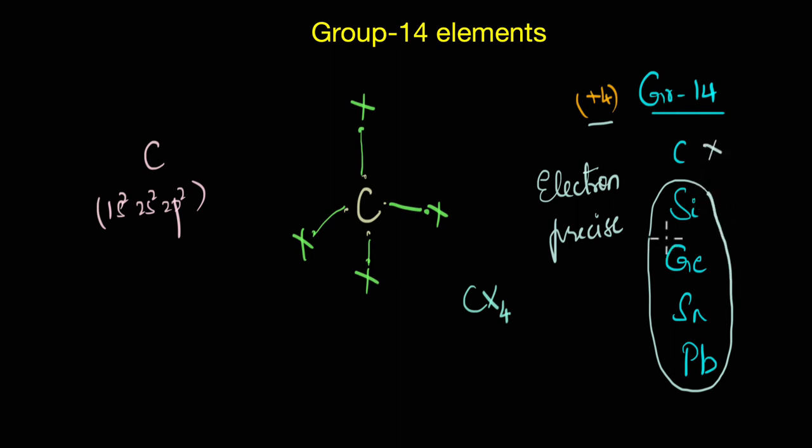But the thing is that some of the elements in this group 14, basically all of the elements except carbon, can still accept extra electron pairs and exceed their covalence beyond four. You might be wondering how is it possible because here you have completely satisfied octet, so where will this extra electron pairs go? Well they would go into the empty d orbitals.